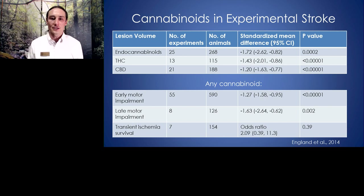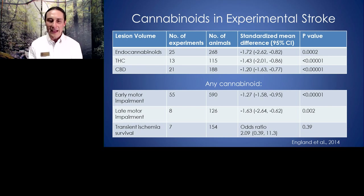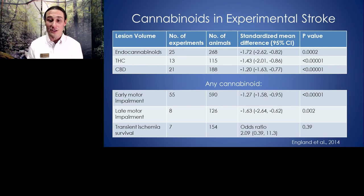There is a huge amount of animal data showing that cannabinoids are protective in experimental models of stroke. Whether endocannabinoids, THC, or CBD are tested, numerous experiments all show that the volume of the lesion is much smaller when animals receive injections of these compounds. Any cannabinoid — synthetic, endocannabinoid, or phytocannabinoid — has been associated with less early and late motor impairment and improved survival. It's more than double the survival in animals that receive cannabinoids on average, based on a 2014 review article.